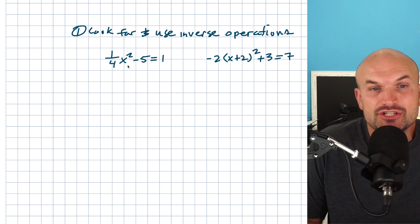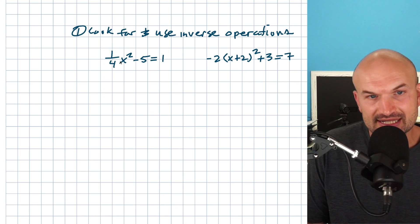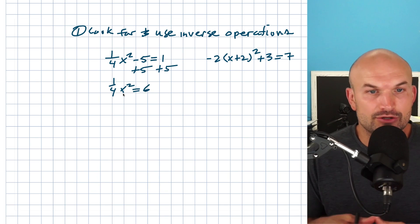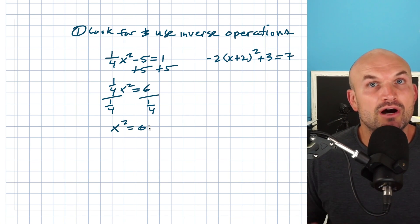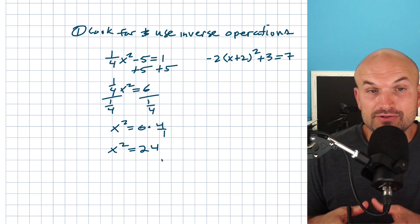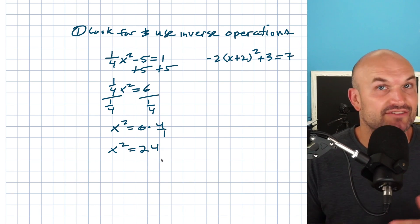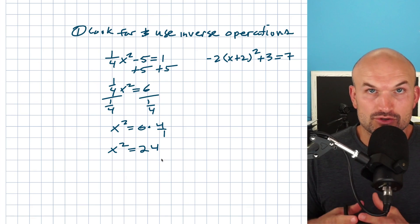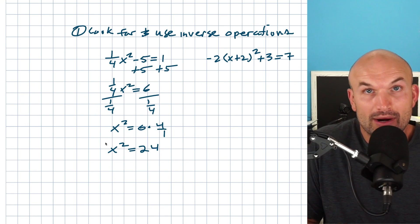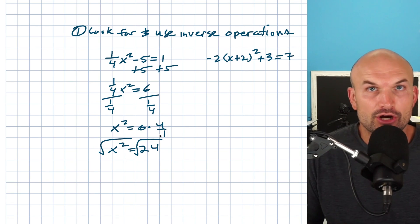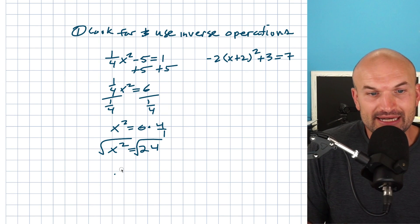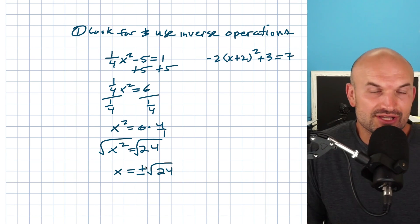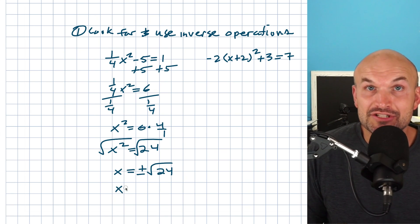What are the inverse operations? They're just undoing what property is happening to your variable. In this example, we are multiplying by one fourth and subtracting by five. When solving using inverse operations, you always undo addition and subtraction first, then undo multiplication and division. To undo subtraction, I added five to both sides. To undo multiplication, I divided by one fourth — dividing by a fraction is the same as multiplying by the reciprocal. So I got x squared equals 24. Now you must undo squaring using the square root, and since we're introducing the square root, we need two answers: x equals plus or minus the square root of 24, which simplifies to plus or minus two square roots of six.